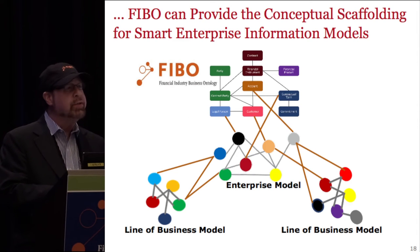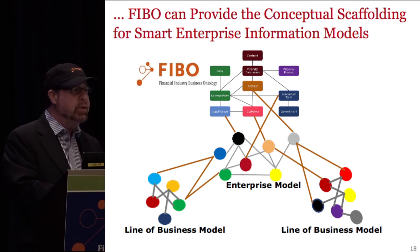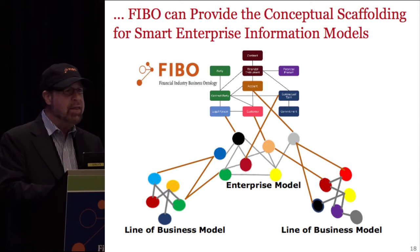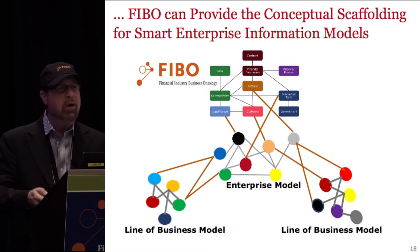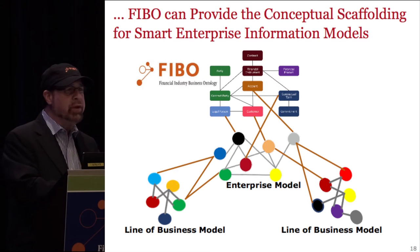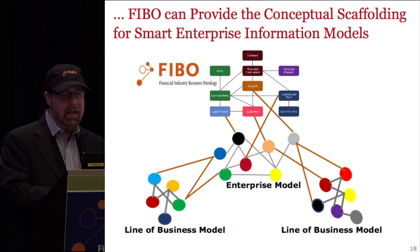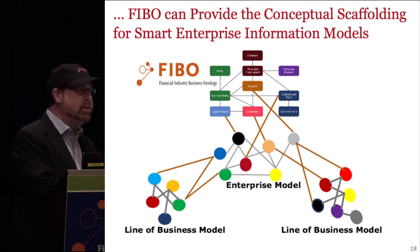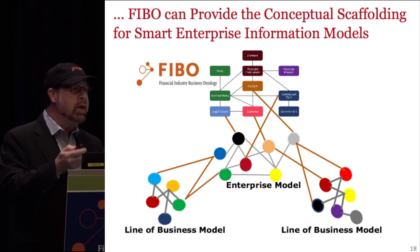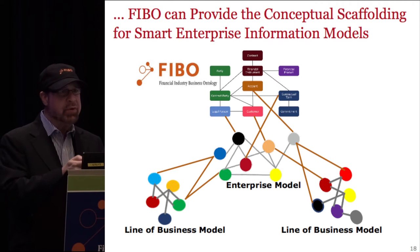FIBO can also provide a conceptual scaffolding for companies to extend their own information models. With the elementary structure of FIBO, we can extend it — for example, with Wells Fargo, we would have a Wells Fargo business ontology that reuses FIBO, imports FIBO, and extends it with Wells Fargo's unique business definitions with its own unique DNA to create an enterprise model. You can then extend enterprise models with line-of-business models that reuse enterprise concepts that reuse the industry-level concepts, managing concepts like the definition of 'customer' across differing levels in one common broadly multidimensional linked model.